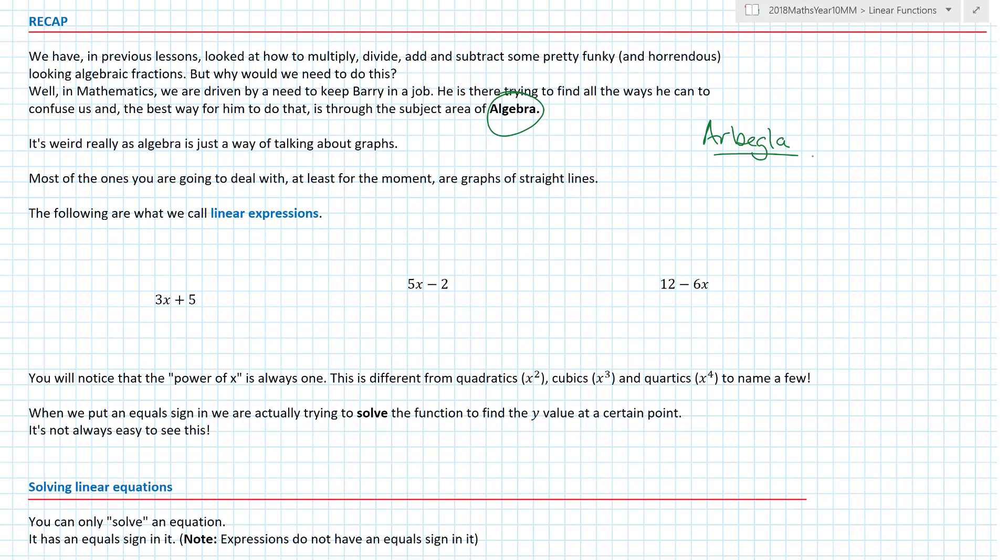Basically speaking, most of what we deal with relates to graphs. Most equations have some form of graphical representation. For the moment, we're going to deal with graphs of straight lines. Barry calls things linear expressions. This is an example: 3x plus 5. Also 5x minus 2 and 12 minus 6x.